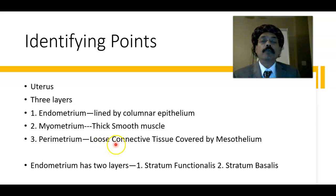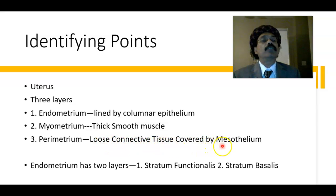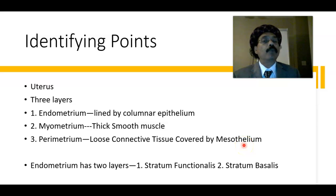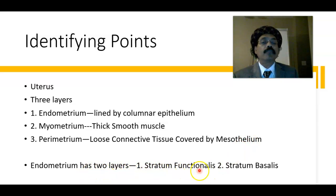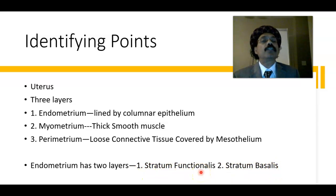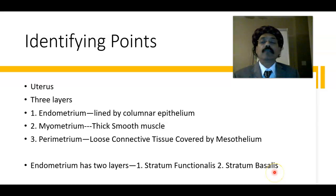The perimetrium is composed of loose connective tissue covered by mesothelium — simple squamous epithelium — which is part of the visceral peritoneum. The endometrium has two layers: stratum functionalis and stratum basalis. The stratum functionalis is shed during the menstrual cycle and is regained from the stratum basalis layer.